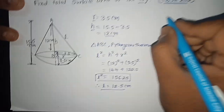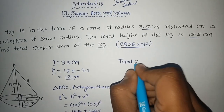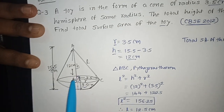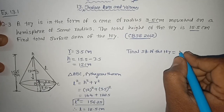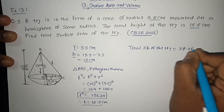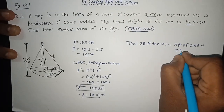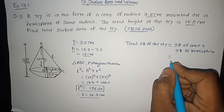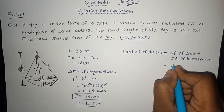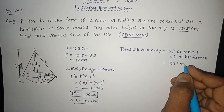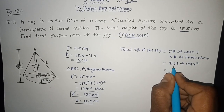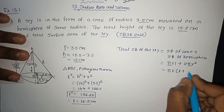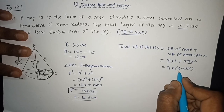Now we find the total surface area of the toy. Total surface area = surface area of cone + surface area of hemisphere = πrL + 2πr². Here π and R are common, so we factor: πr(L + 2r).